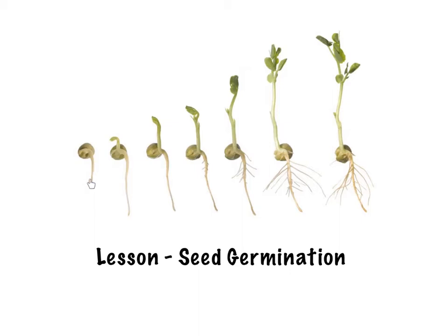It starts off with the root system coming down. Now the root will tend to grow towards the soil and it's basically searching for water. It develops in getting that by osmosis, which means that it absorbs water because there's more water outside the root than there is inside the root, and water moves in.